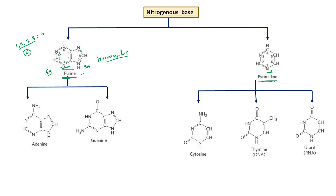In the six-membered ring, numbering goes anticlockwise starting from the lowest-numbered nitrogen as position 1. In the five-membered ring, the numbering continues clockwise. So in purine, positions 1, 3, 7, and 9 are nitrogens. In pyrimidine, the lowest nitrogen is assigned as number 1.